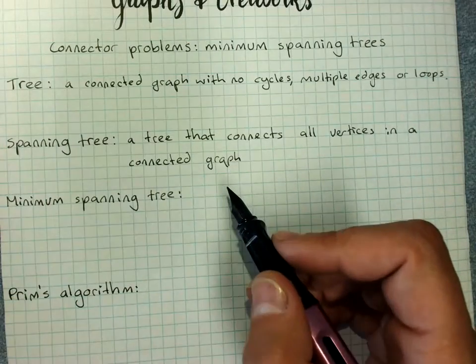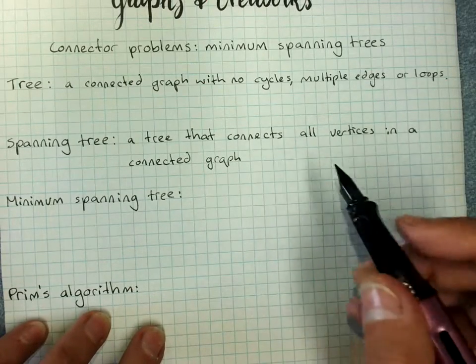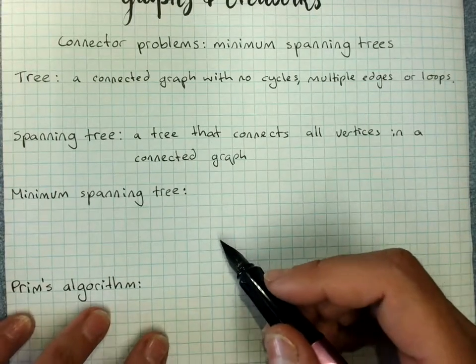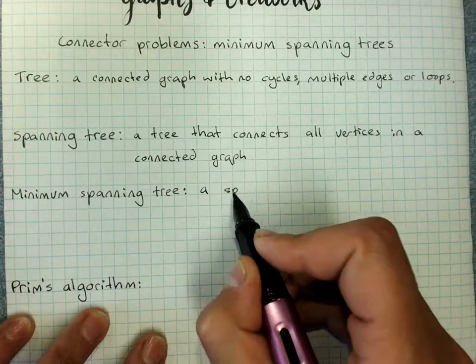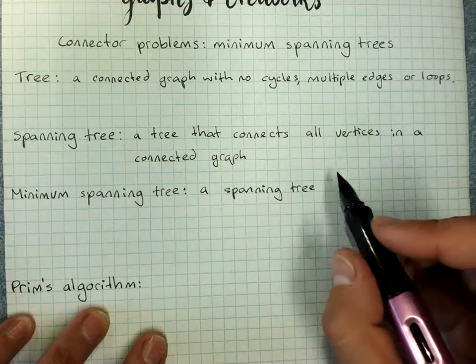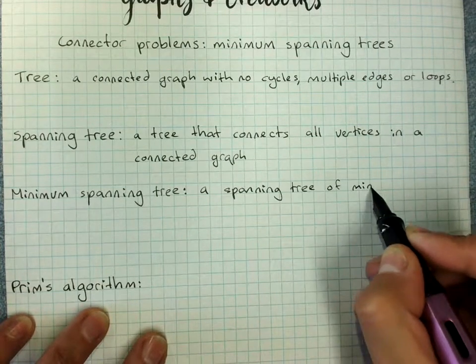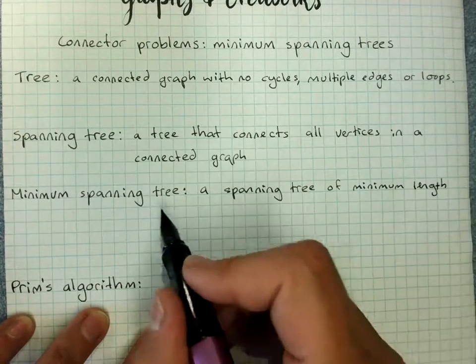Now you can have more than one option - there might be two different trees within a graph that both have minimum length. And obviously this happens in a weighted graph.